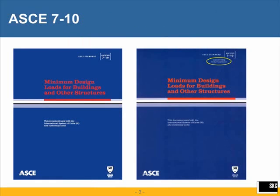The 2012 IBC adopts, for structural design purposes, ASCE 7-10 edition. The reason we have two covers on this picture is that the second cover is of the second printing of ASCE 7-10, and the second printing includes corrections to errata found in the first printing. So if you haven't bought your copy yet, the second printing is what you want to buy.